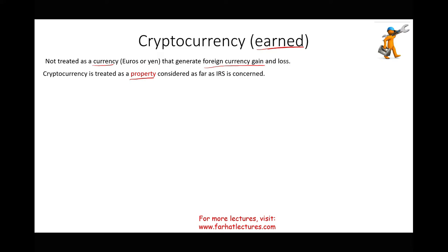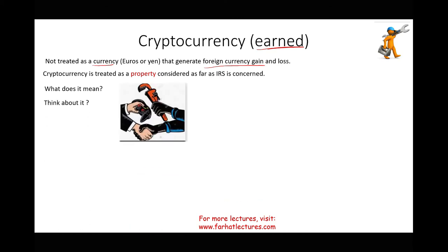Property means: if you provided a service — say I'm a plumber and I fixed your sink — and you gave me a joystick worth $200 instead of cash, that joystick is a property. I obtained property in exchange for my service. As a self-employed individual, I have revenue of $200. The same applies if you gave me one unit of Litecoin worth $200 — I have revenue of $200.